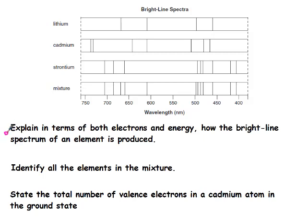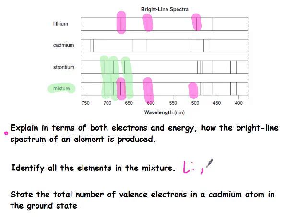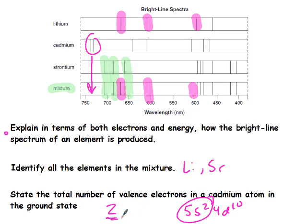To identify elements in a mixture using line spectra: match lines from the mixture to known element spectra. Any line in the mixture that matches lithium or strontium indicates those elements are present; lines not matching cadmium confirm it's absent. For valence electrons of cadmium: its electron configuration ends in 5s² and 4d¹⁰—it has two valence electrons because those are its outermost electrons.